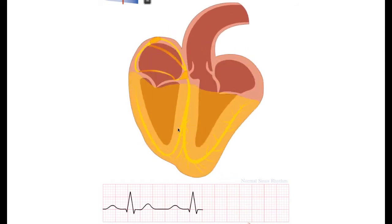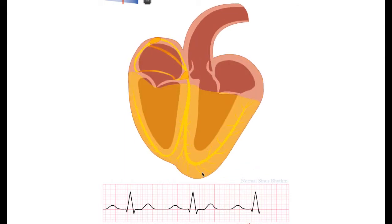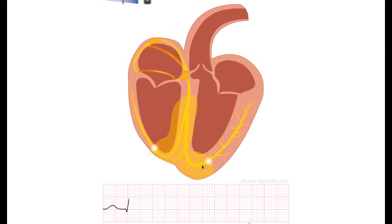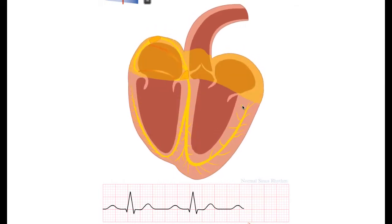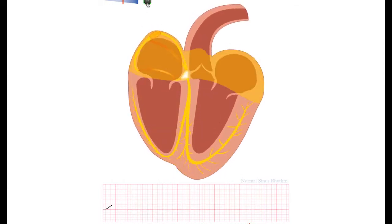And the septum is activated from the left to the right. Also the apex is activated first before the basal parts of the heart are activated.